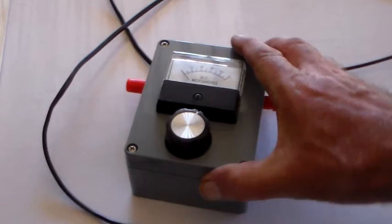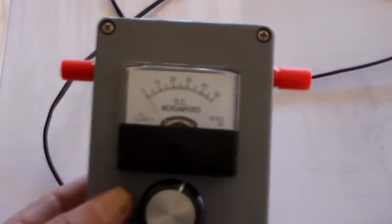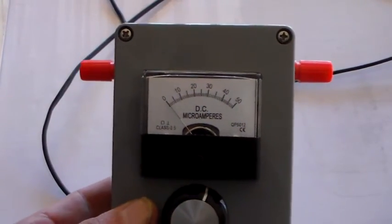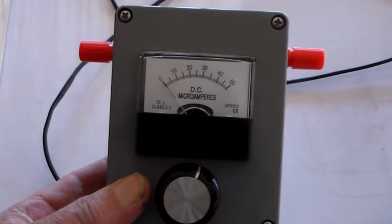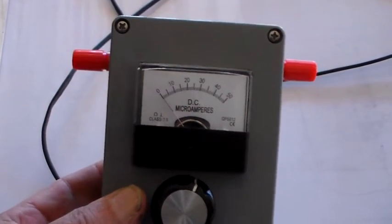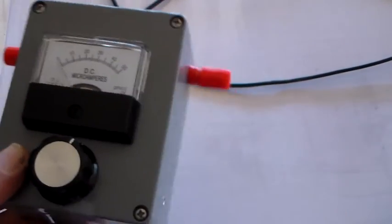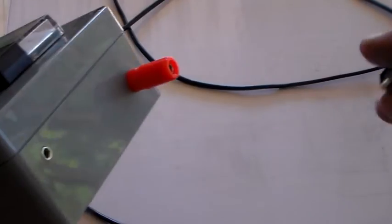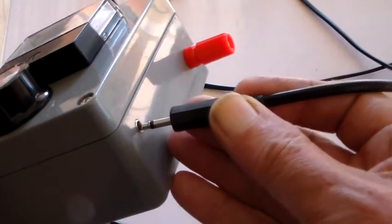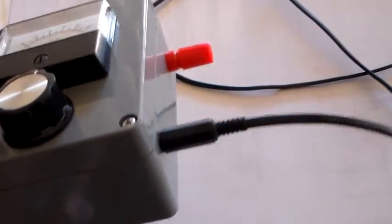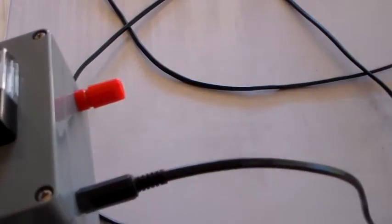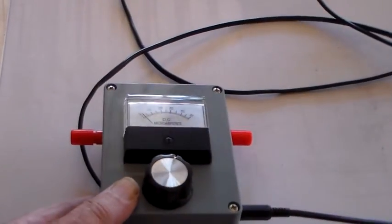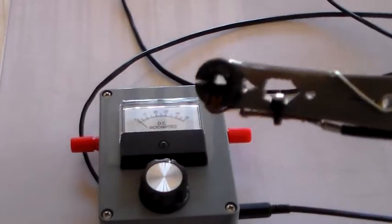Now here is the RF current meter I showed you the other day. You've already seen what it looks like inside. What I've done is I've added a little socket, a little jack socket on the side there, so that I can plug in my remote current probe.